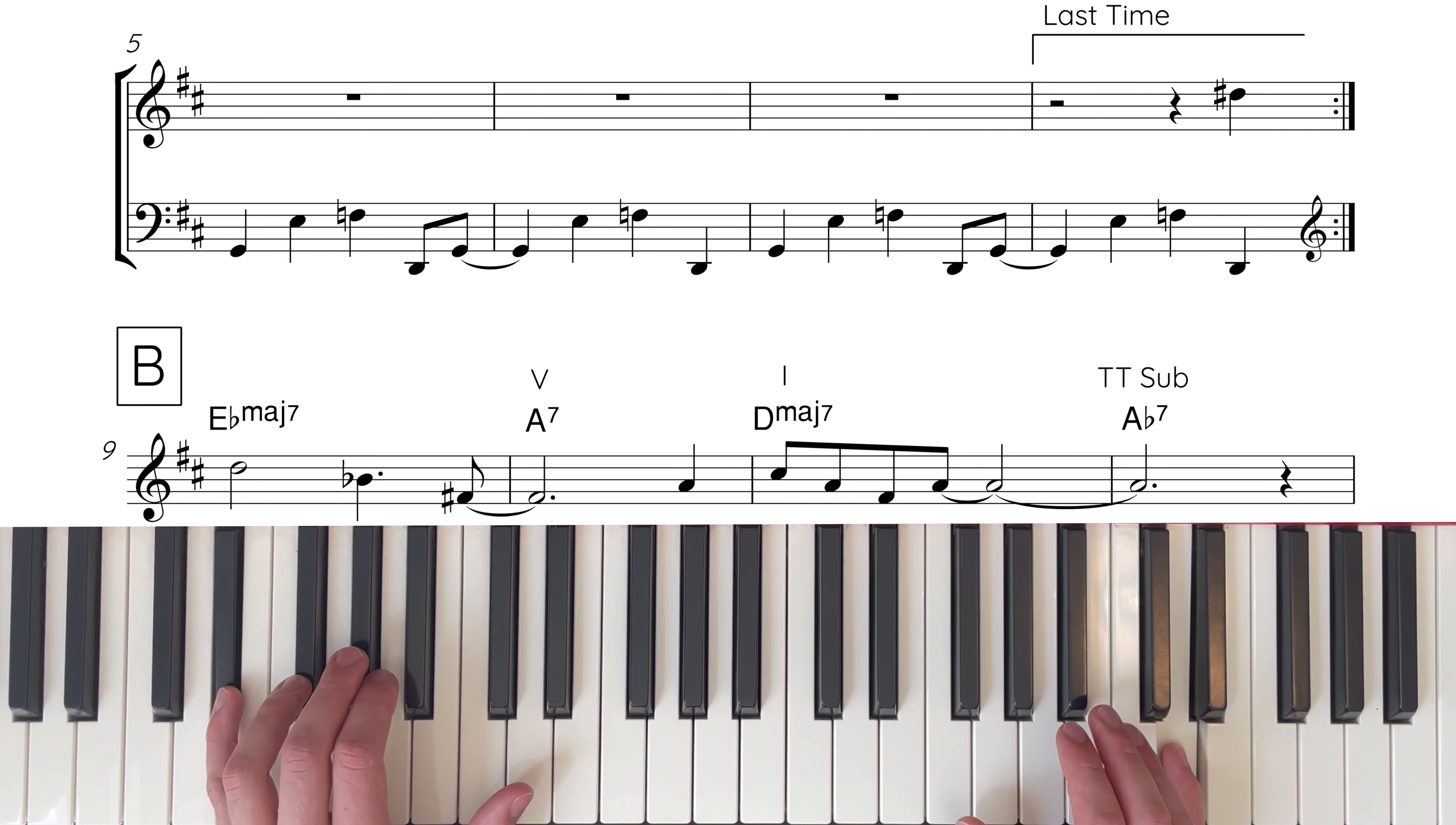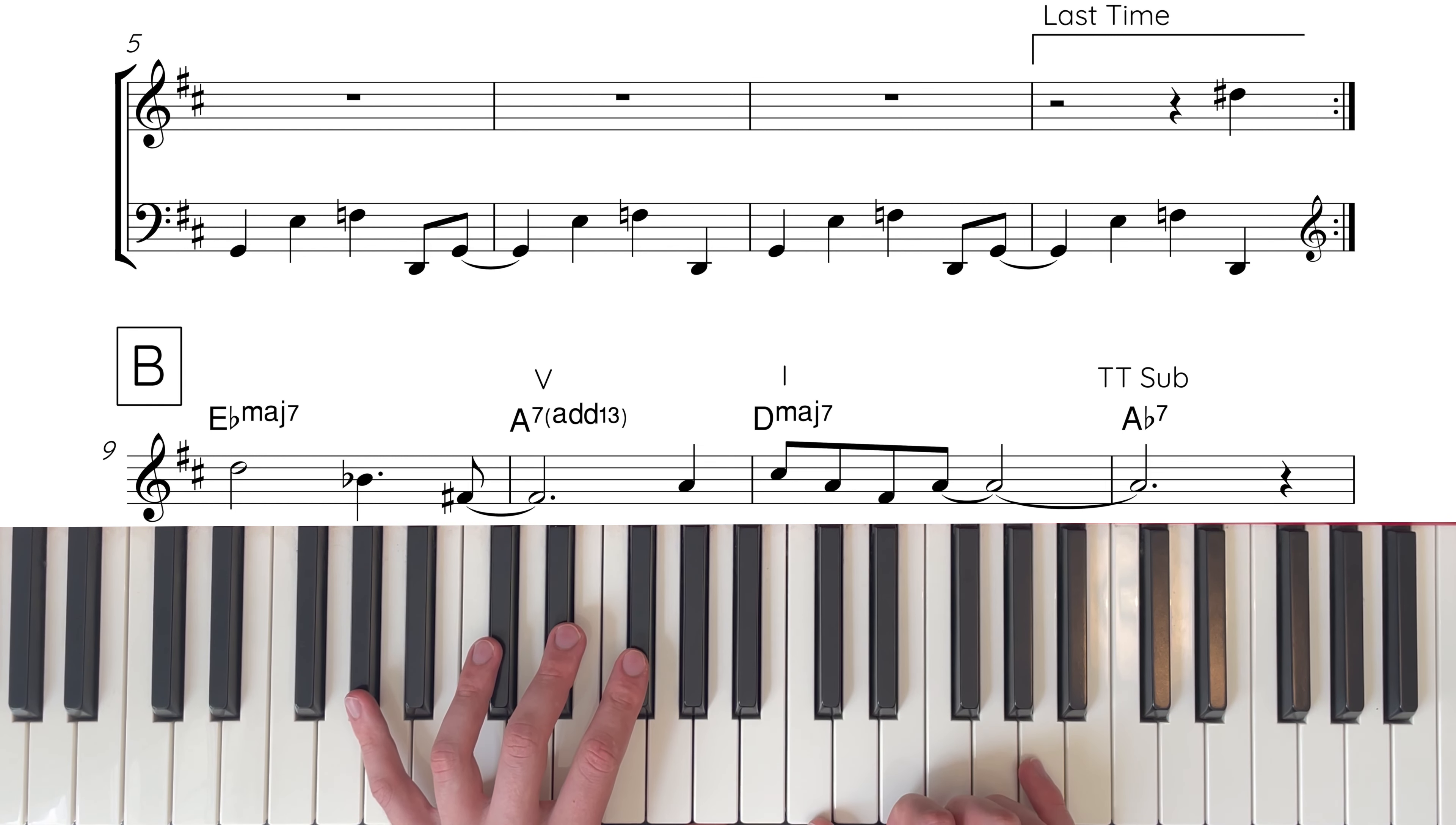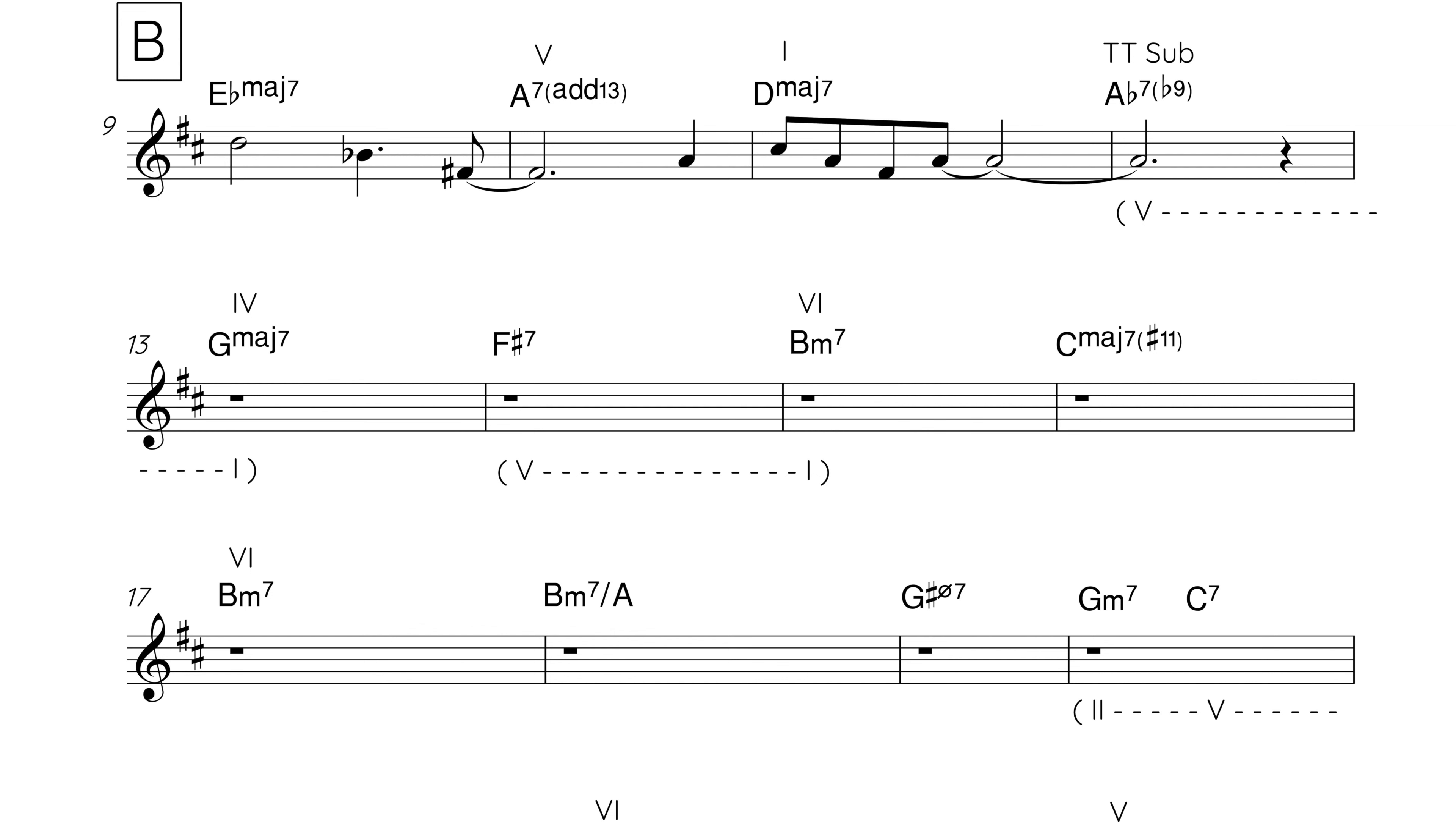The melody starts on beat 4 in the last bar of the A section. It begins with a semitone approach from above to the major 7 of the E flat major 7 chord D before falling to the 5th B flat. At this point you're expecting the melody to fall through the other chord tones in the E flat major 7 chord but instead it pre-empts the upcoming A7 chord and falls to the 13 or 6th of the A7 chord F sharp. It's worth pointing out here that these three notes the D B flat and F sharp also outline an augmented triad. So the melody then rises to the roots of the A7 chord before outlining the chord tones of the D major 7 chord falling from the major 7 C sharp to the 5th A to the 3rd F sharp before rising back to the 5th A which is tied into the next bar.